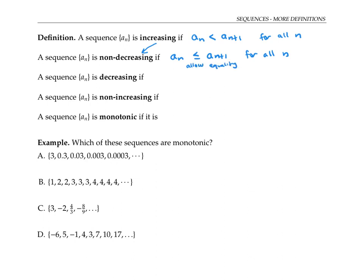A sequence is decreasing if each term is greater than or equal to a sub n plus one for all n. Non-increasing is like decreasing, but we allow for equality between consecutive terms.